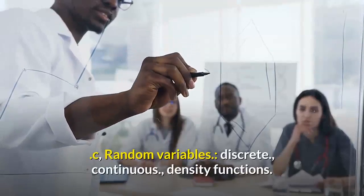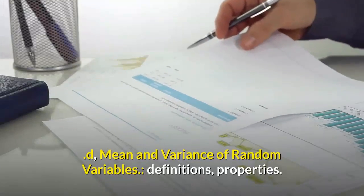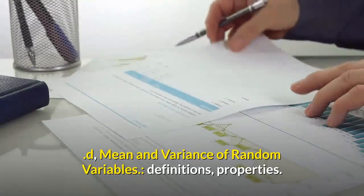C. Random variables: discrete, continuous, density functions. D. Mean and variance of random variables: definitions, properties.